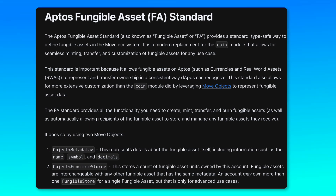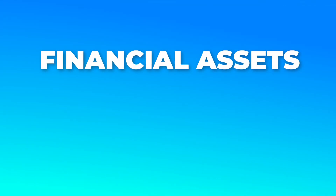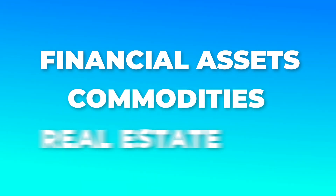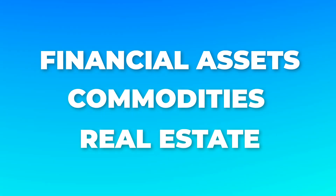The fungible asset standard of Aptos is way more modern than ERC20 tokens, and allows anyone to easily represent many assets like financial assets, commodities, or real estate. This leads to more standardized implementations, which means less work for developers, better compatibility, less bugs, and less security vulnerabilities.